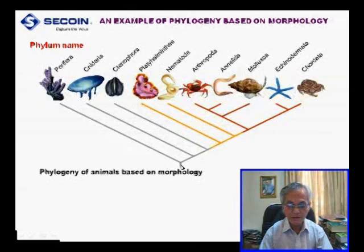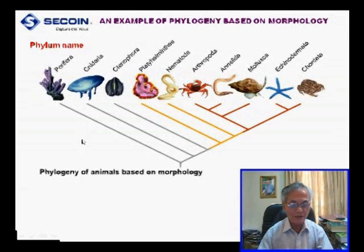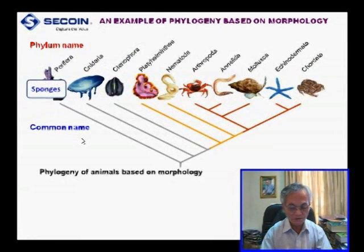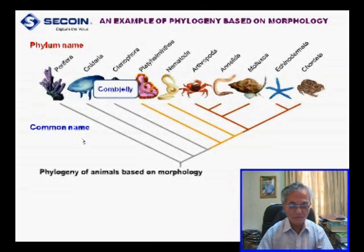The root of this tree is animals. The taxa include taxon Porifera, taxon Cnidaria, etc. — these are the formal names. For easy understanding, I would like to give the common names: for example, this is a sponge, this is a jellyfish. Other common names include flatworm, roundworm.